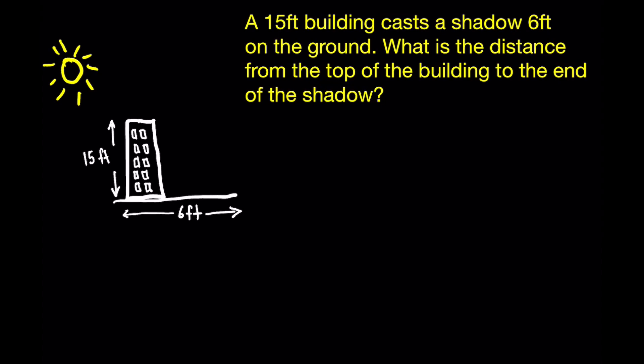So here what you have to realize is that the sun is hitting the building and then the building is projecting this shadow forward on the ground. And what they want you to realize is that this forms a right angle triangle.